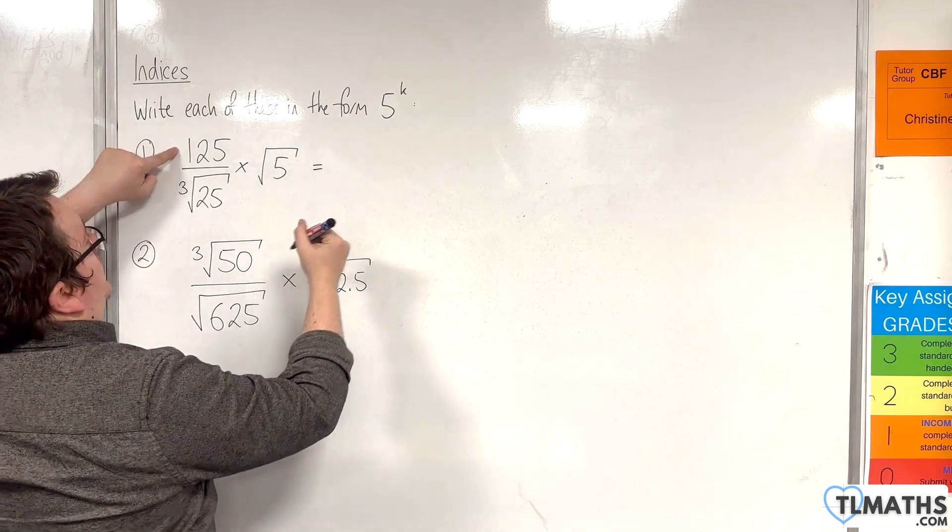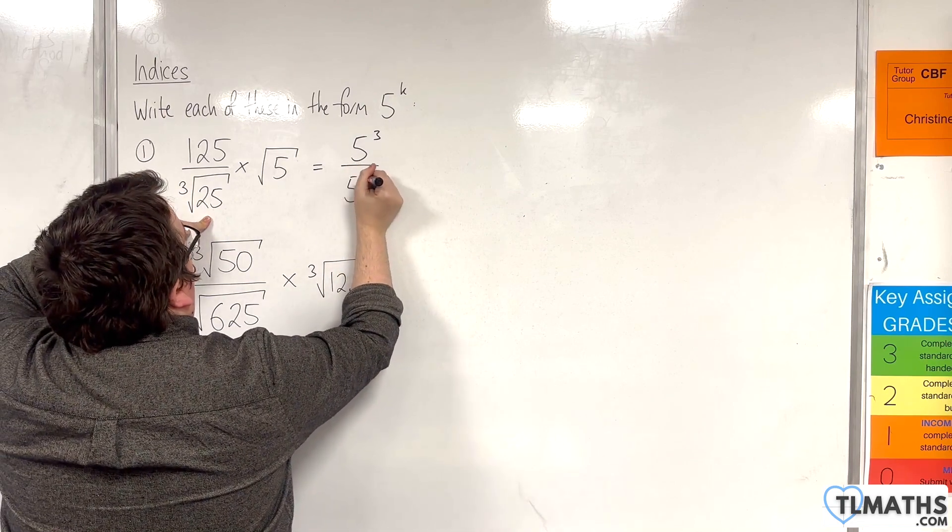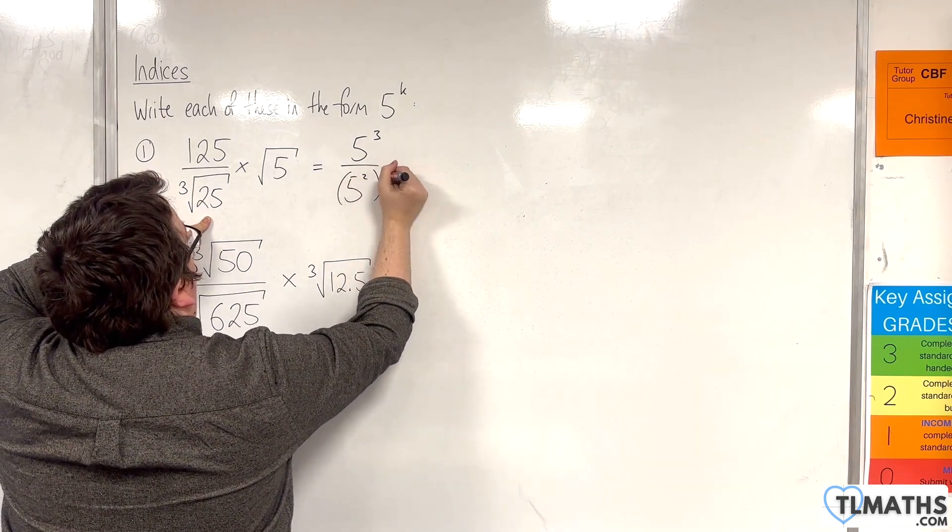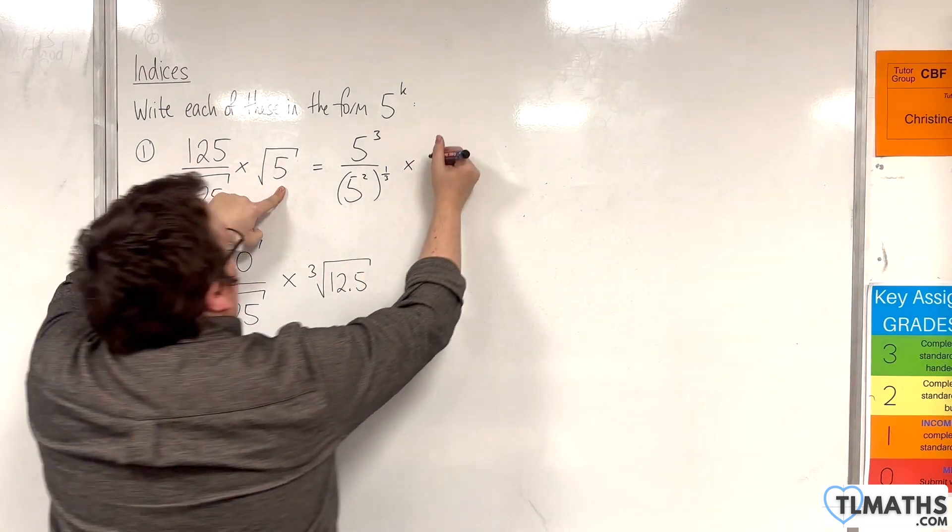So 125 is 5 cubed. 25 is of course 5 squared. So we've got 5 squared to the power of 1 third, and we're multiplying that by the square root of 5, so 5 to the power of 1 half.